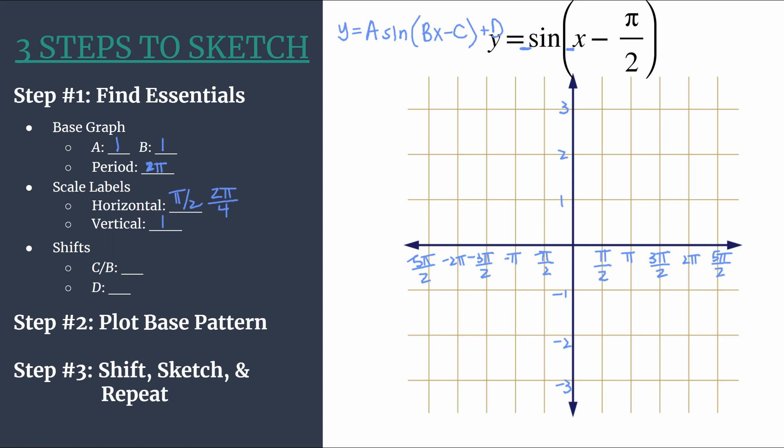So C over B is our phase shift. We see that that is the shift x minus pi over two. In this case it's very easy to see pi over two is the phase shift or the horizontal shift because C is pi over two and B is one.